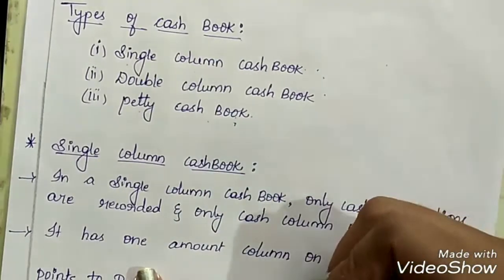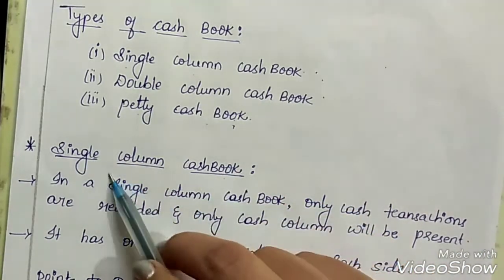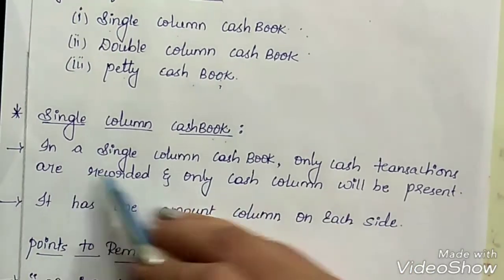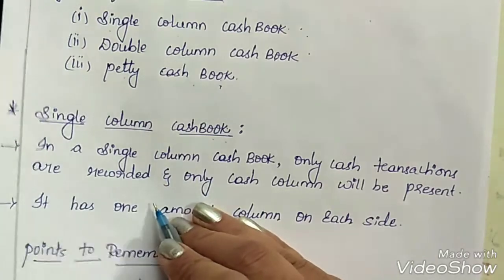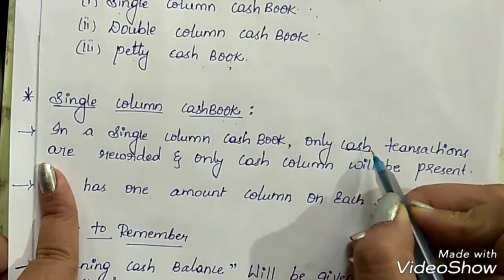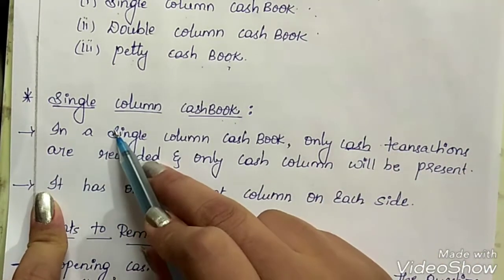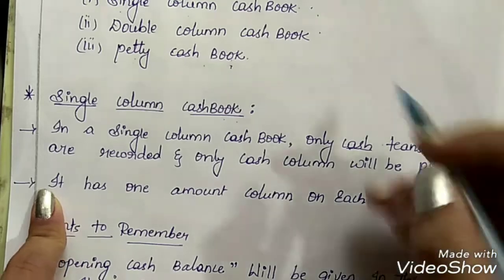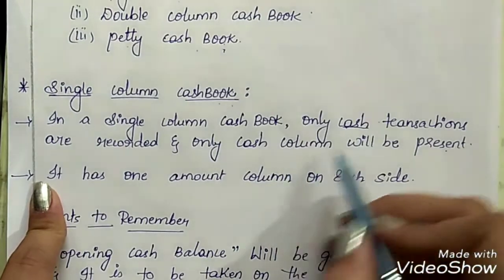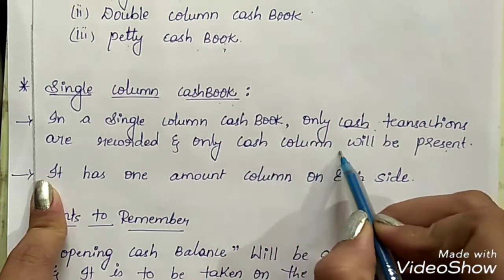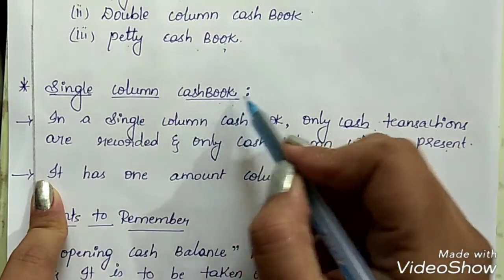In this session we are going to discuss about single column cash book. In a single column cash book, only cash transactions are recorded. Even bank transactions are not recorded in the single column cash book. Only cash transactions and a single cash column will be present. Hence, it is called a single column cash book, or you can also call it a simple cash book.